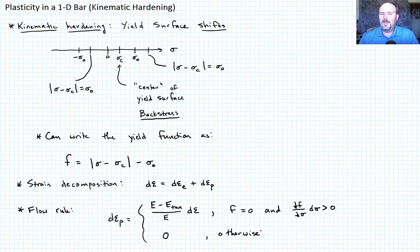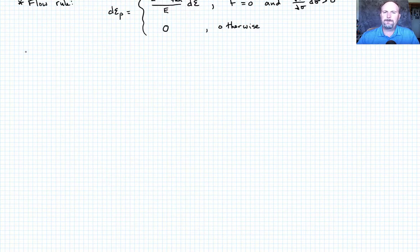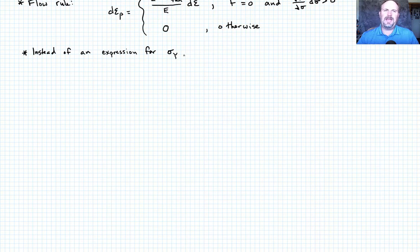So now really what the problem that's presented by kinematic hardening is finding an expression for the evolution of the back stress as a function of plastic strain. So we can write that as, instead of an expression for sigma y, we need an expression for the back stress sigma c.